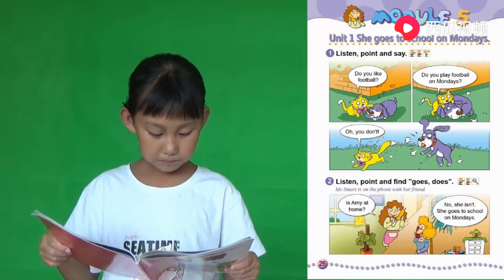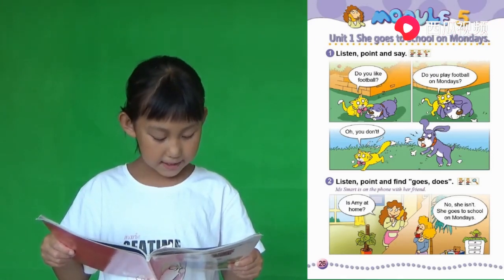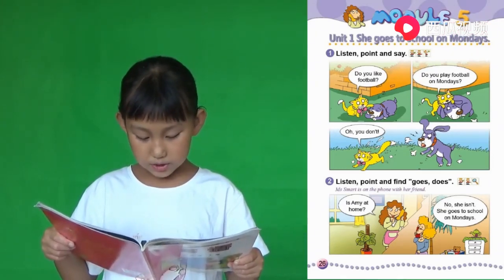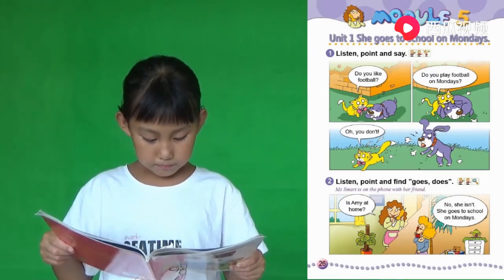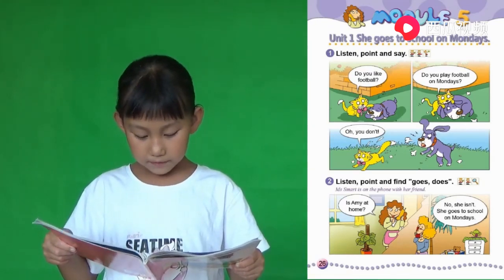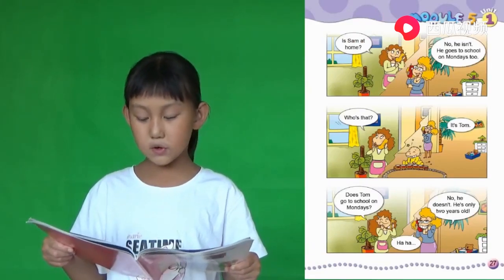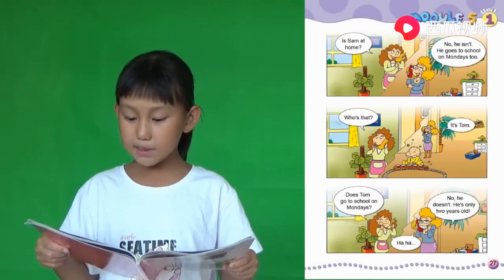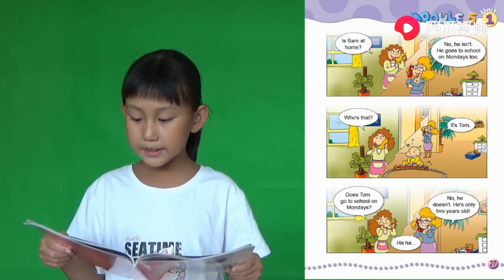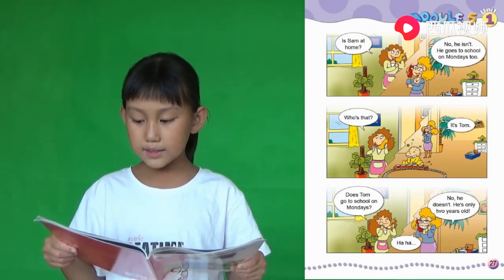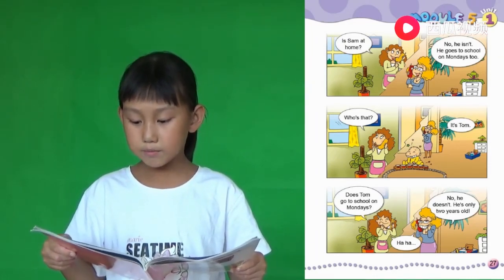Smart的女婿在打电话跟她的朋友。 Is Amy at home? 爱你在家吗？ No, she isn't. She goes to school on Mondays. 不，她没在家。她星期一去上学。 Is Sam at home? 上母在家吗？ No, he isn't. He goes to school on Mondays too. 她星期一也去上学。